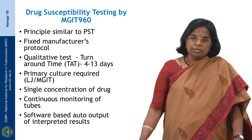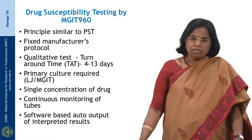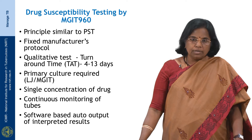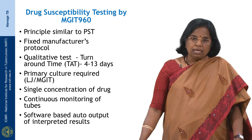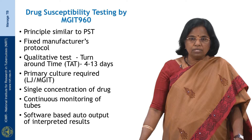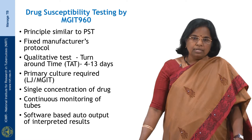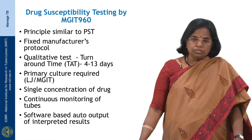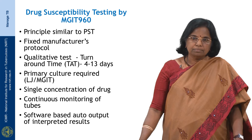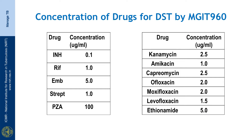Now we move on to drug susceptibility testing by MGIT 960. The principle is similar to PST and a fixed manufacturer's protocol has to be followed. It is a qualitative test with a turnaround time of 4 to 13 days. A primary culture is required — this could be either from LJ or from MGIT — and a single concentration of the drug is used. Continuous monitoring of the tubes is equipped with software-based auto output of interpreted results. These are the concentrations employed in MGIT 960 DST.